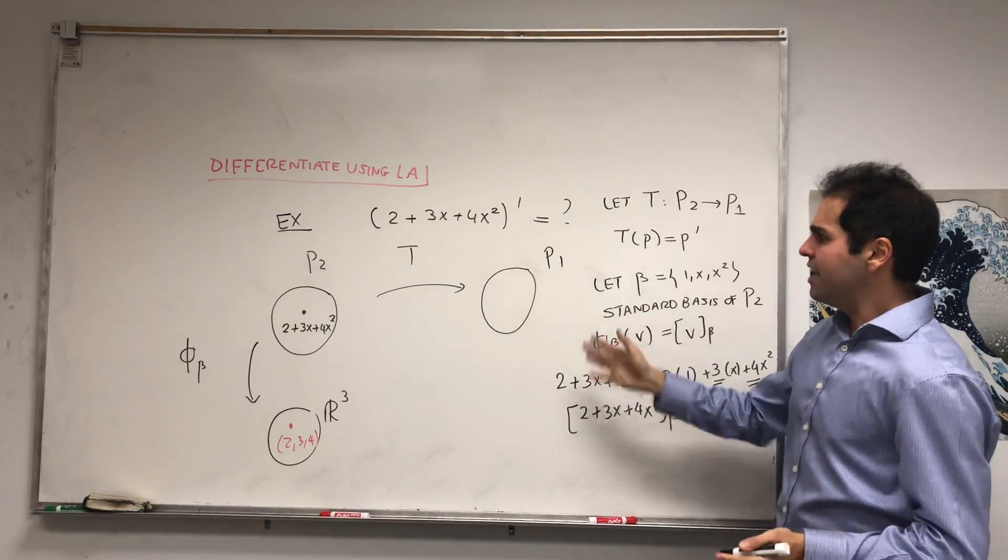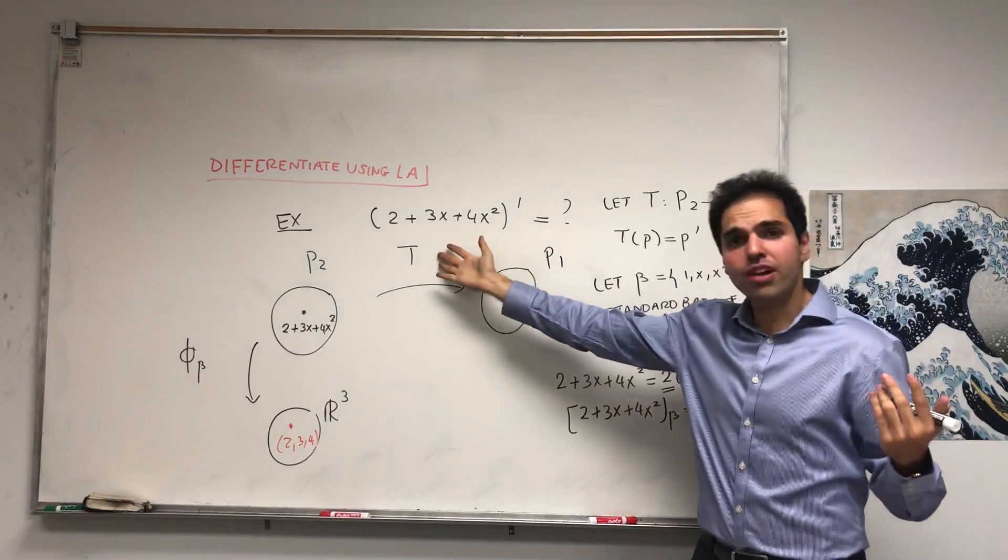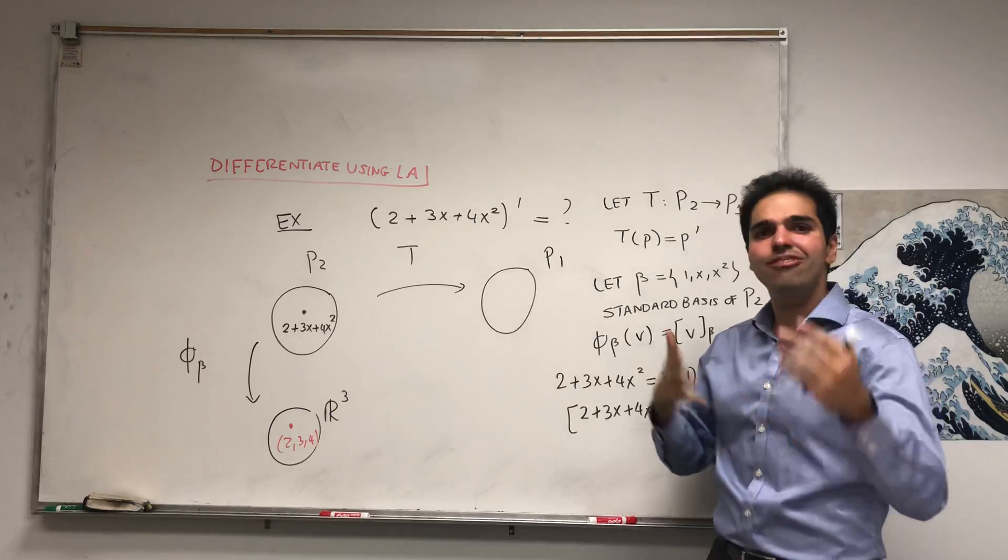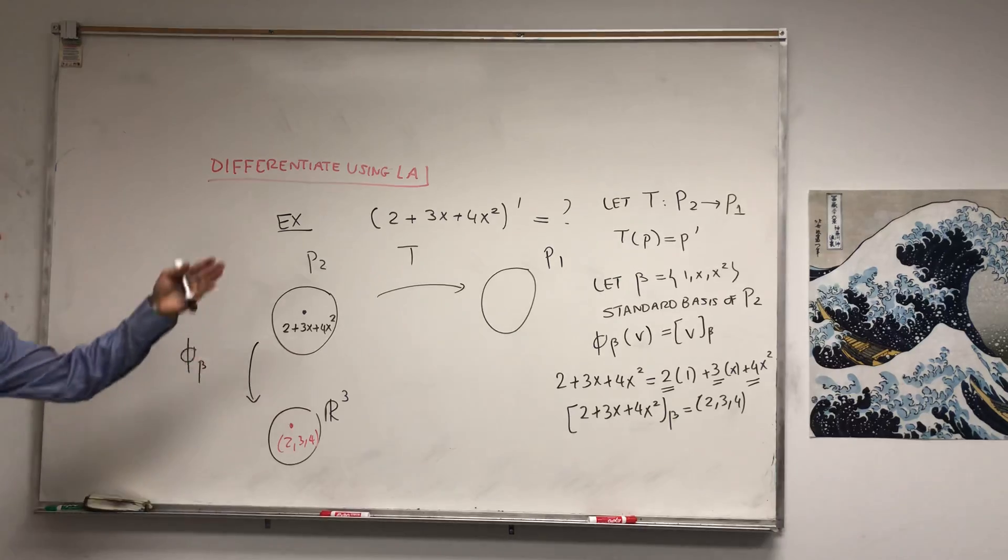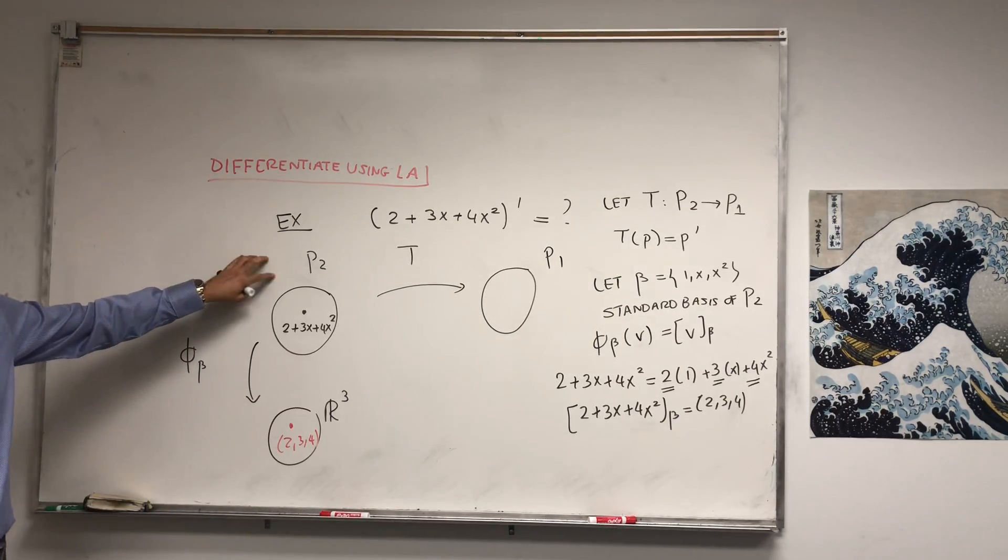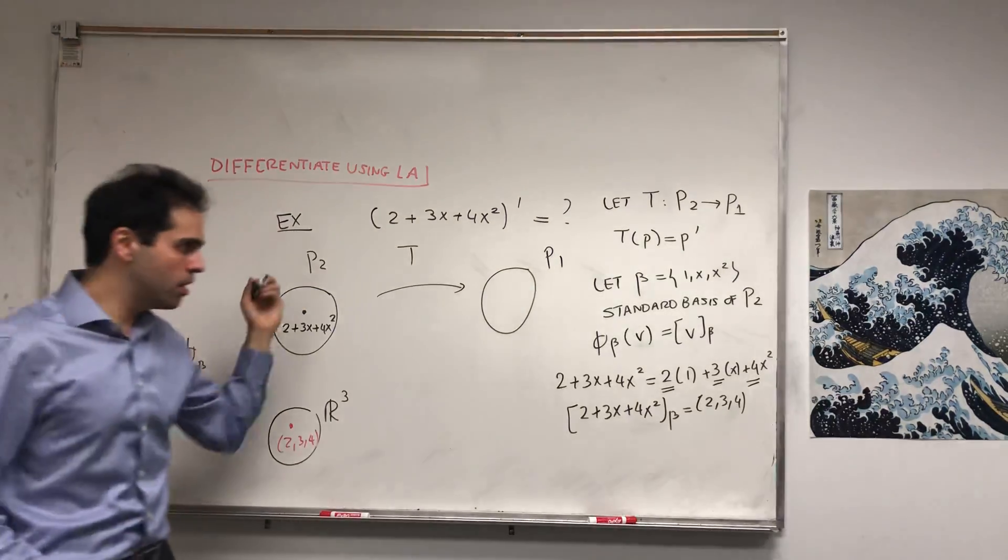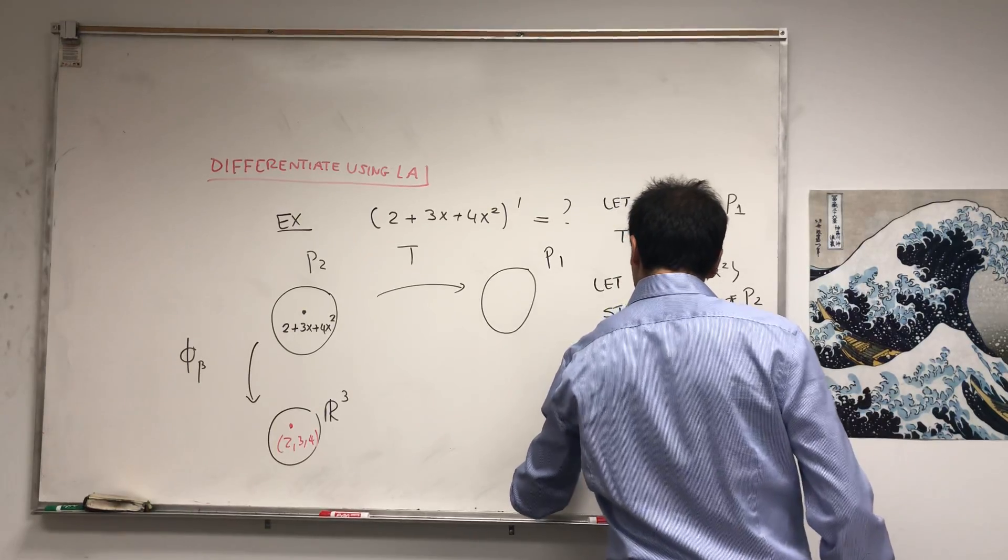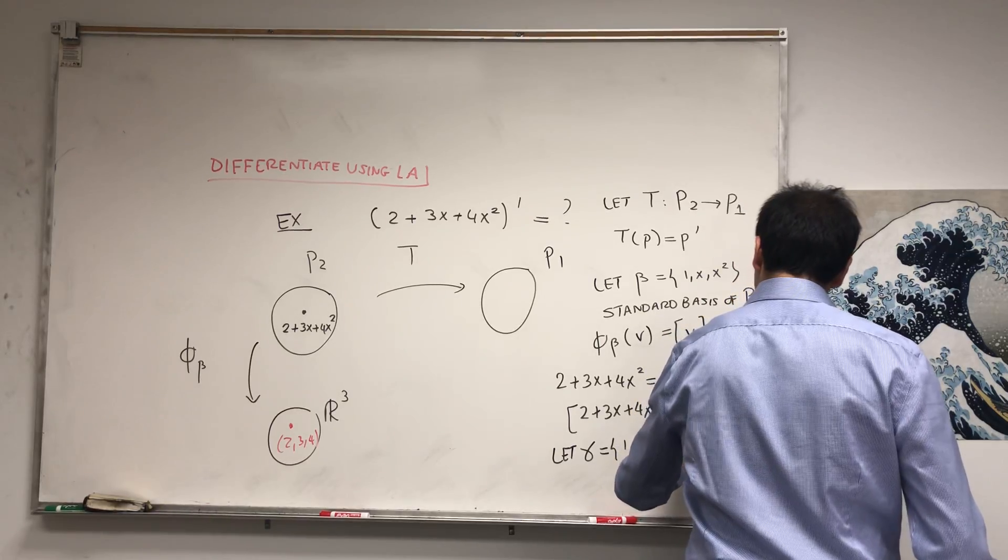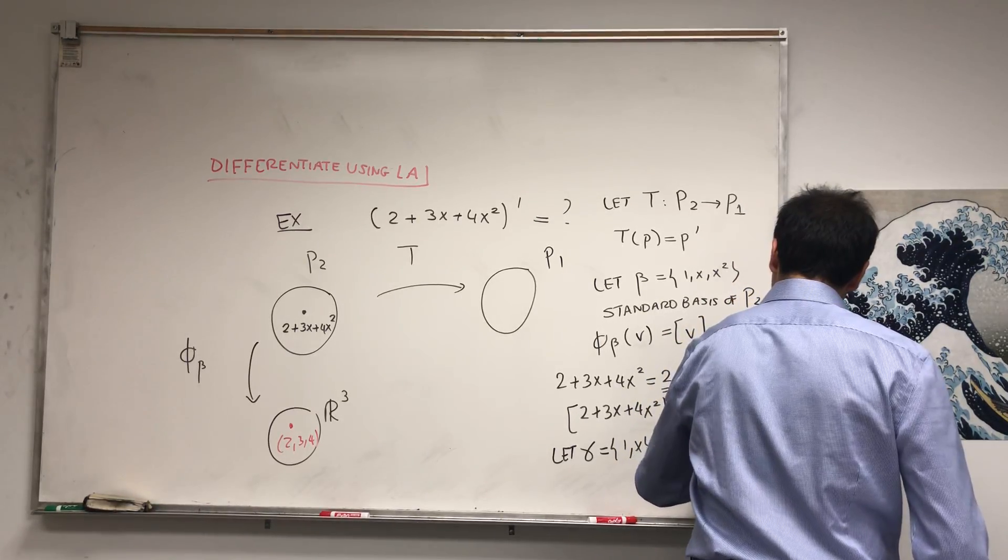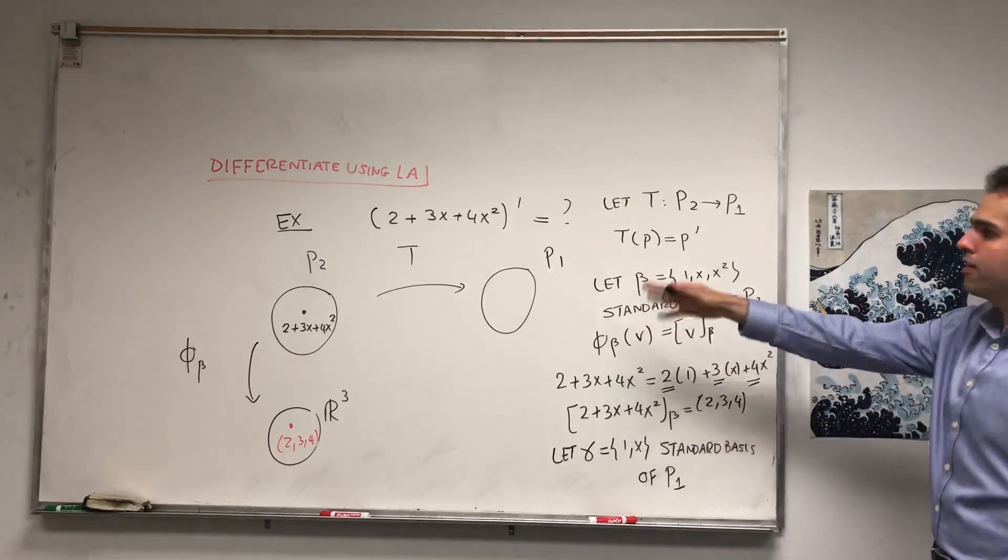So what we did now is simply we took this abstract thing, converted it into a concrete list of numbers, which here is 2, 3, 4. All right, the next thing is simply to find the matrix of T. Because T is an abstract linear transformation, we would now like to find a very concrete matrix. And to do that, all we need to do is to find the matrix of T with respect to β here, and some other basis of P1.